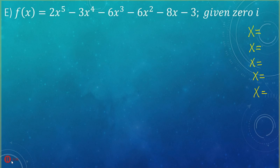They told me that I had one root at i, which means I also have one at negative i. When you multiply (x + i)(x - i) you get x squared plus 1, so let's go ahead and set up our long division.